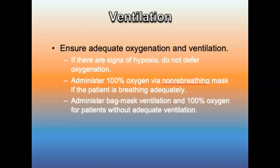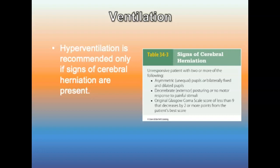Avoid routine hyperventilation. If end-tidal CO2 cannot be monitored, a respiratory rate of 10 to 12 breaths per minute in an adult will achieve the target. The Brain Trauma Foundation recommends hyperventilation only if signs of cerebral herniation are present. The recommended rates are 20 breaths per minute for an adult, 25 for a child, and 30 for an infant under one year old.